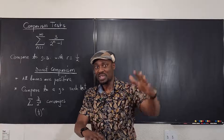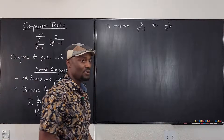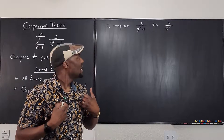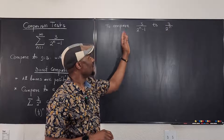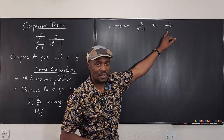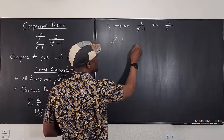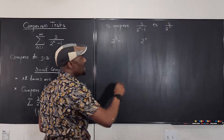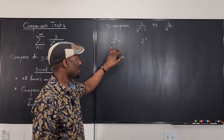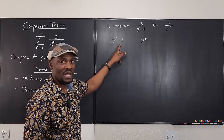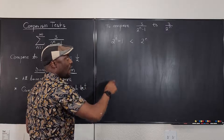So let's set that up. We need to decide which one is bigger — we want to show that our series is less than 3 over 2^n. Focus on the denominators, because that's what matters. Compare 2^n minus 1 to 2^n. Is one less than or greater than the other? Definitely they are not equal — 2^n minus 1 is less than 2^n, because we are subtracting one from it, making the denominator smaller.